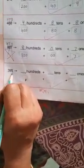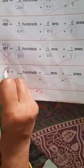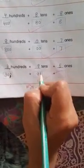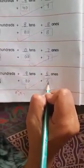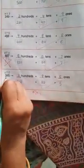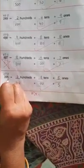Now 395. Again I will write 1s, tens, 100. How many hundreds are here? 3. How many tens are here? 9. How many ones are here? 5. So 9 tens is 90, 5 ones is 5. 300 plus 90 plus 5 will become 395.